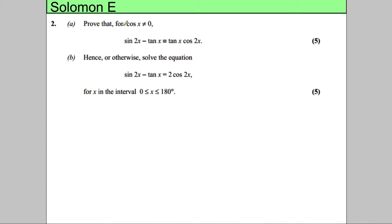In this question, we're asked to prove that for cosine x not equal to 0, the following is true. Now, I want to try and show you that you could do it both ways. I haven't tried this out, but hopefully you can do it both ways.